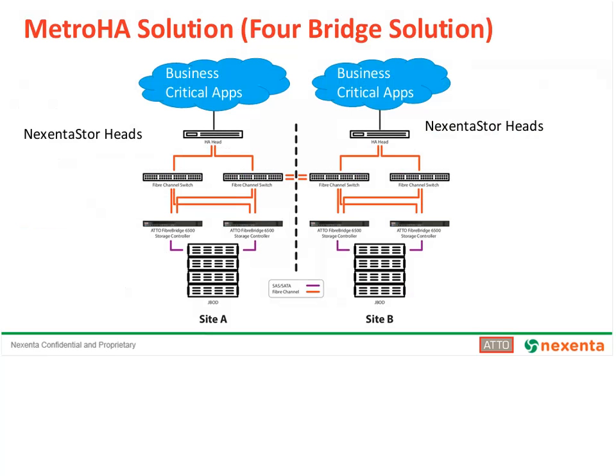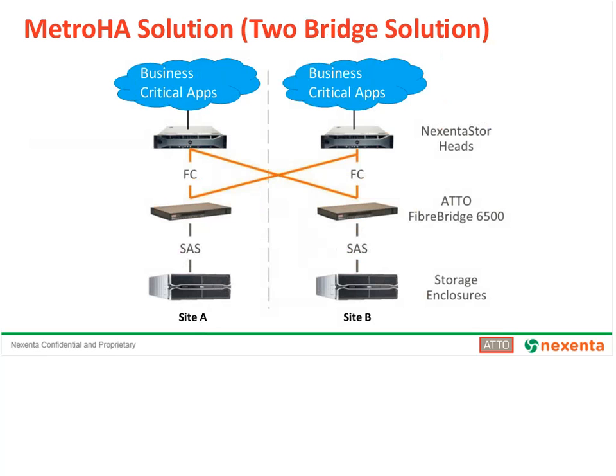There are a couple of different ways to set up a stretch cluster. The first uses four of our 6500 controllers. A four-bridge configuration allows no single point of failure from hosts to storage. This configuration has two 6500s per data center site and enables load balancing and failover in the event of a controller failure, allowing the site to remain functional without failing over to the second site if only a controller fails at the first site. The two-bridge solution provides stretch cluster functionality between sites at a lower cost while reducing reliability at a single site. With one 6500 per site, a controller failure would cause failover to the second site until the controller is replaced. The four-bridge configuration eliminates this failure case and keeps the site running during a hardware failure.